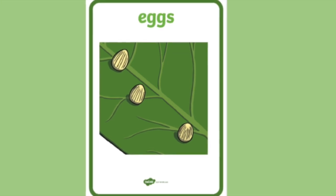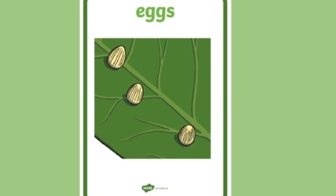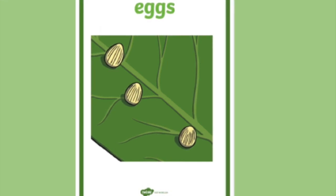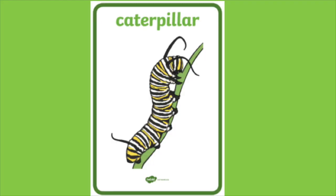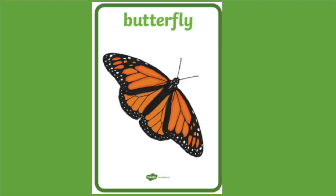The first stage of a butterfly's life cycle is the egg. Next is the caterpillar — the caterpillar is the second stage. Next is the chrysalis. Last is the butterfly.